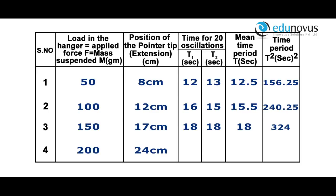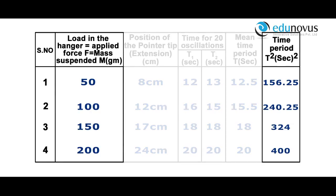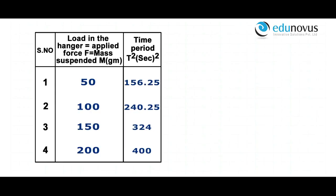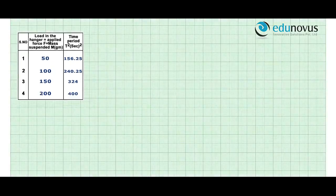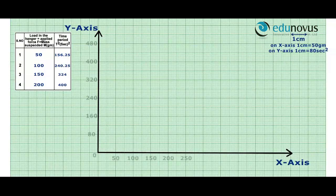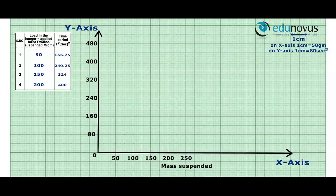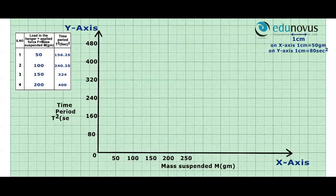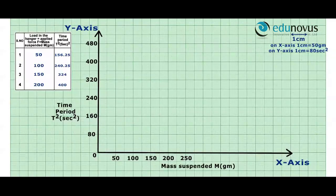Plot a graph between mass suspended M and time period squared T². Place mass M on the x-axis and T² on the y-axis. Scale on x-axis: 1 cm = 50 grams. On y-axis: 1 cm = 80 seconds².